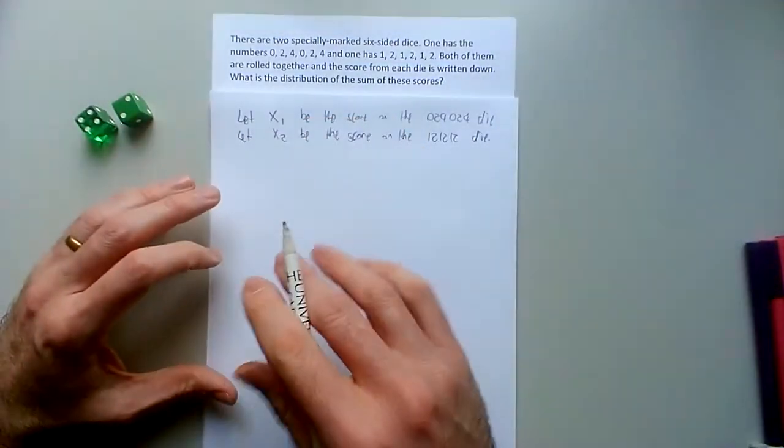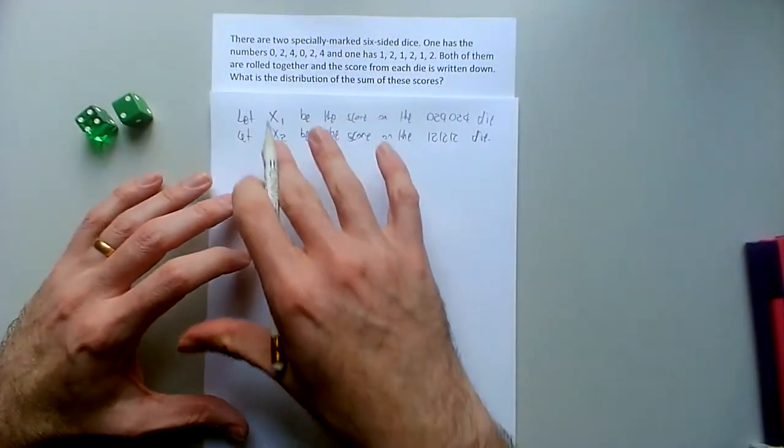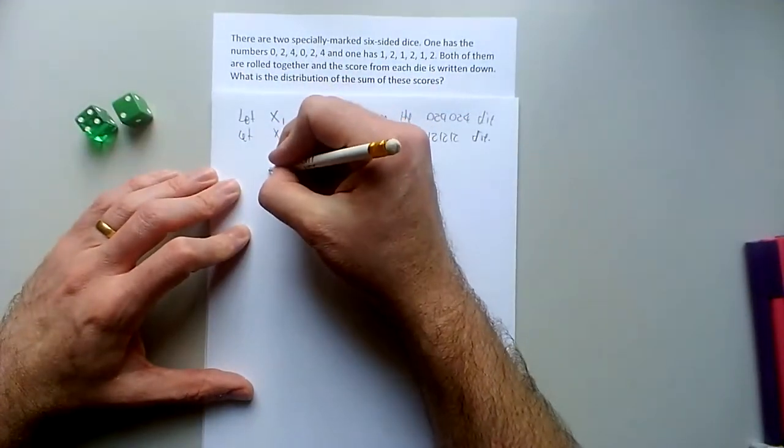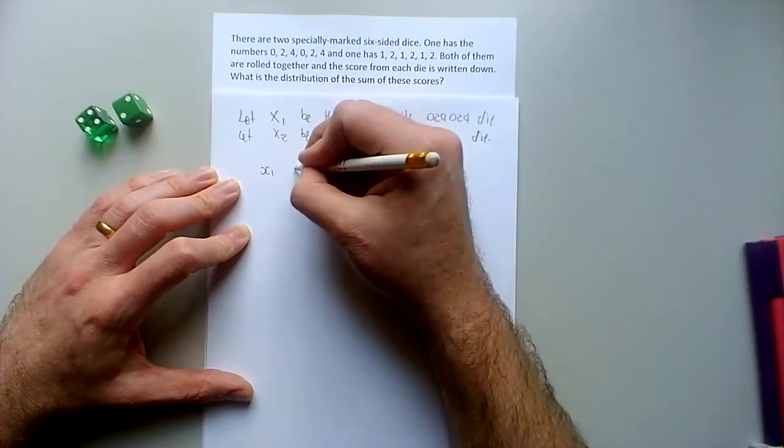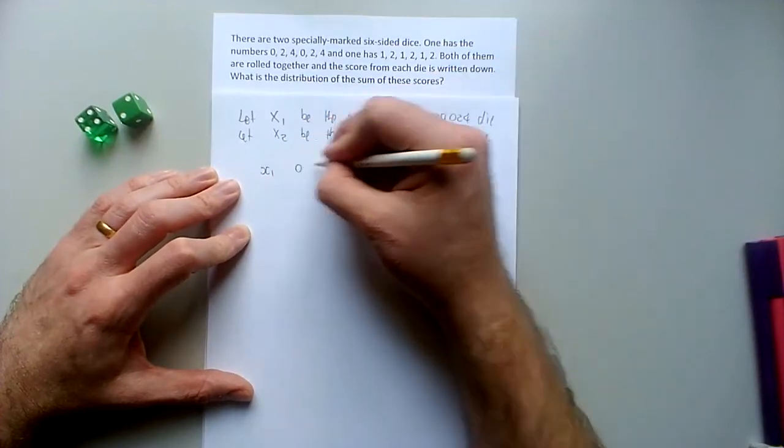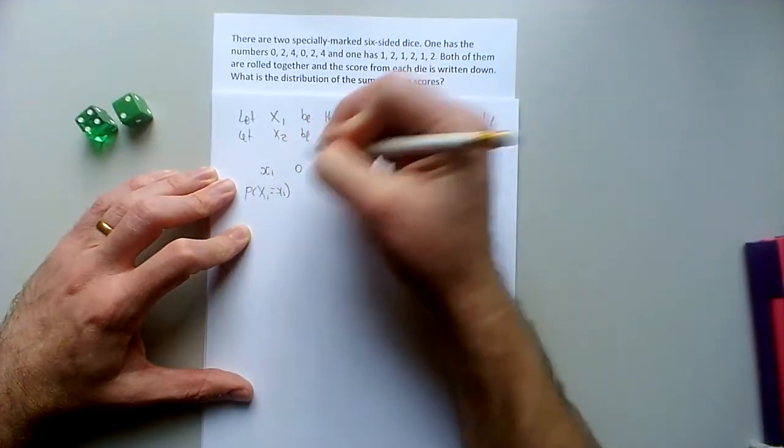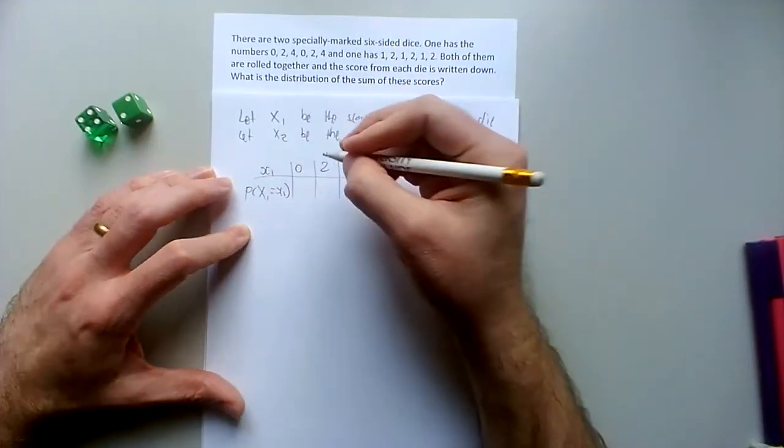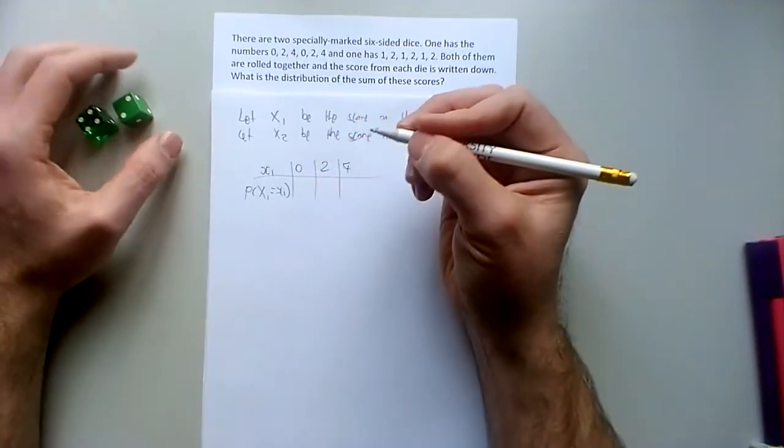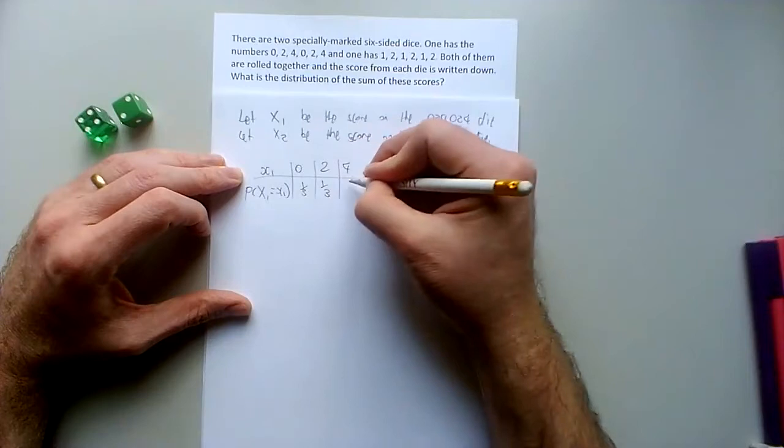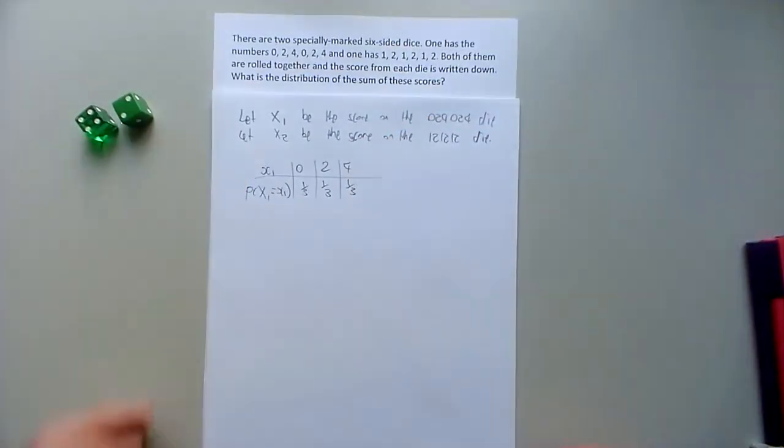So then a description of the distribution of each of those separately, ignoring the others. So x1 can be 0, 2 or 4 and the probability that x1 is equal to x1 would be, well I guess a third of them is 0, like 2 out of the 6, which would be a third.